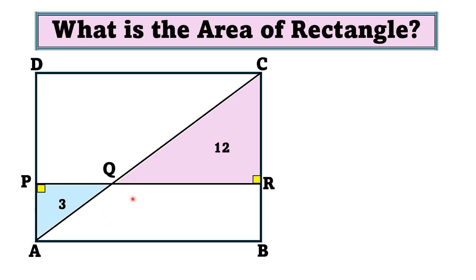Since angle PQA is equal to angle CQR because these are opposite angles. Now, if there are two triangles in which two angles are the same,